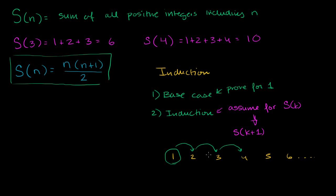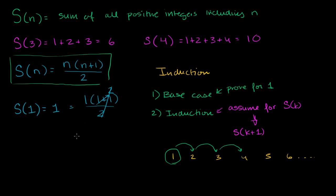Let's actually prove this by induction. Let's do this function on 1. The sum of all positive integers including 1 is just literally going to be 1 — there's no other positive integer up to and including 1. And we can prove that this is the same thing as 1 times 1 plus 1, all of that over 2. 1 plus 1 is 2, 2 divided by 2 is 1, 1 times 1 is 1. So this formula worked for 1. We've proven our base case.